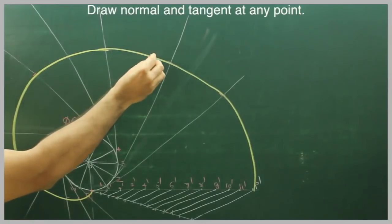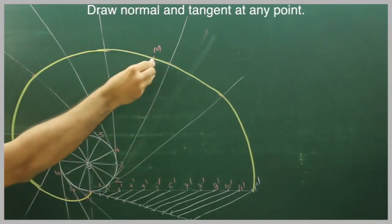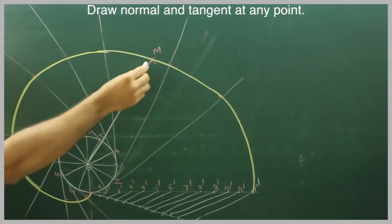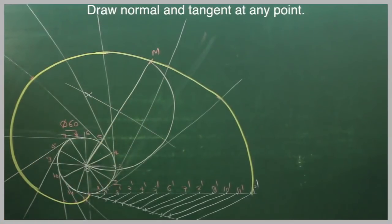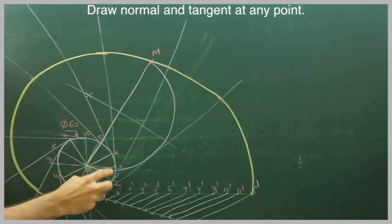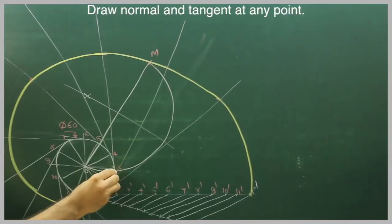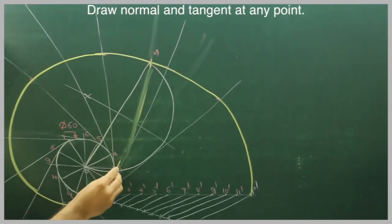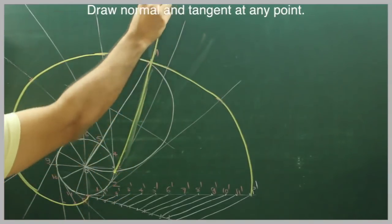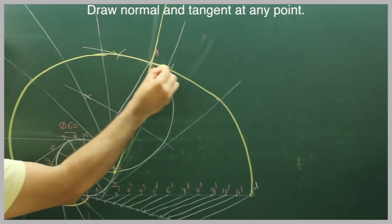Now take point M anywhere. We are going to draw a tangent from point M. So first we will join M to O, bisect and draw a semicircle. So wherever it will cut in this circle, from that point to M would be a tangent, and then you can draw perpendicular here to draw tangent.